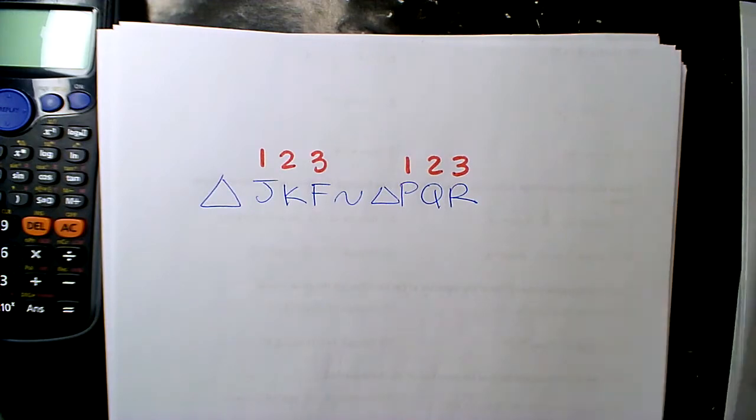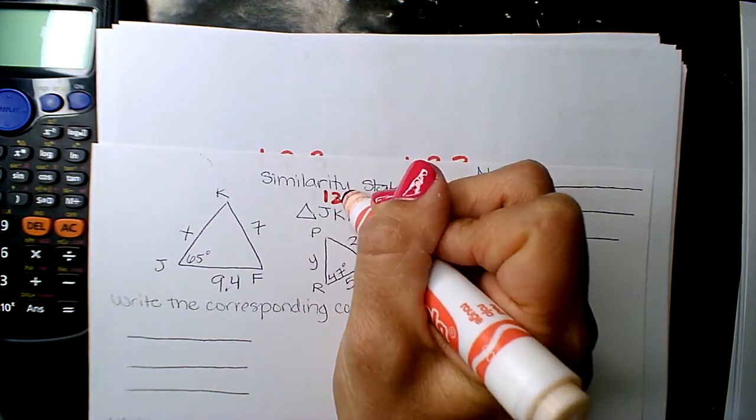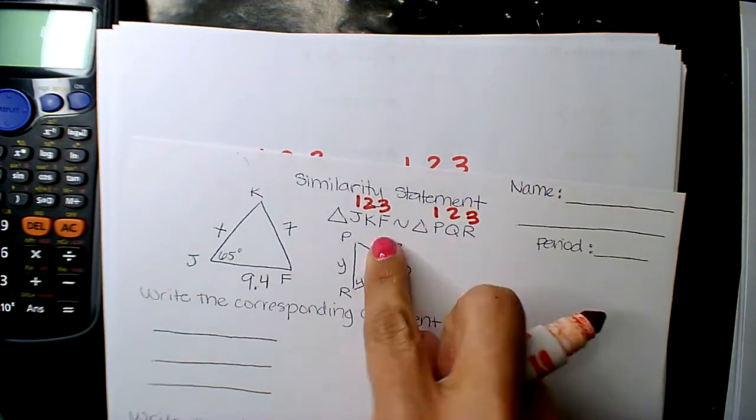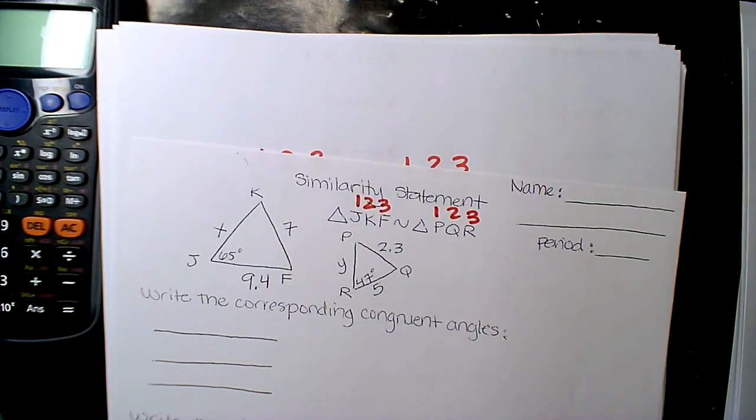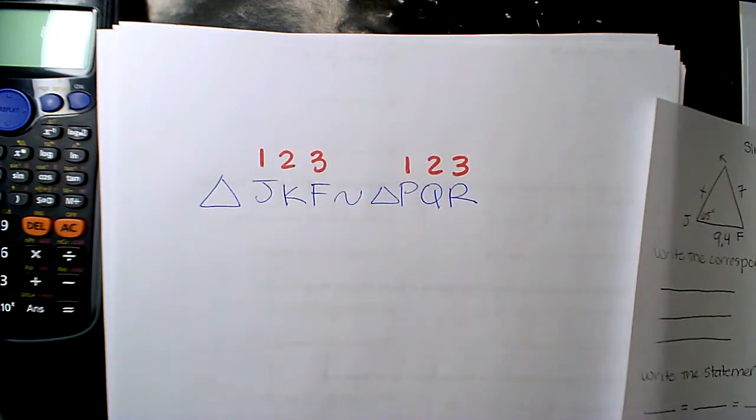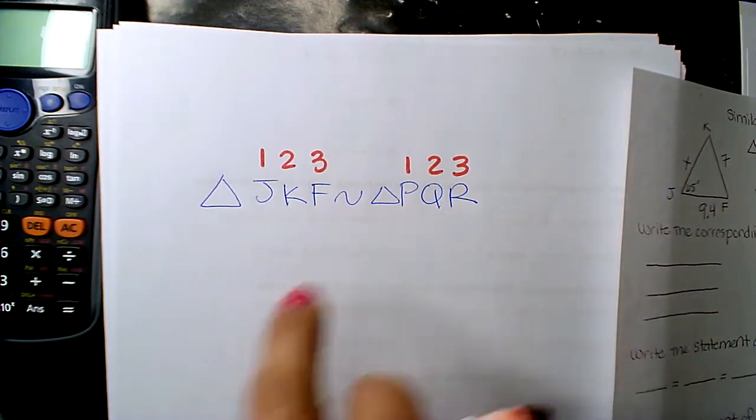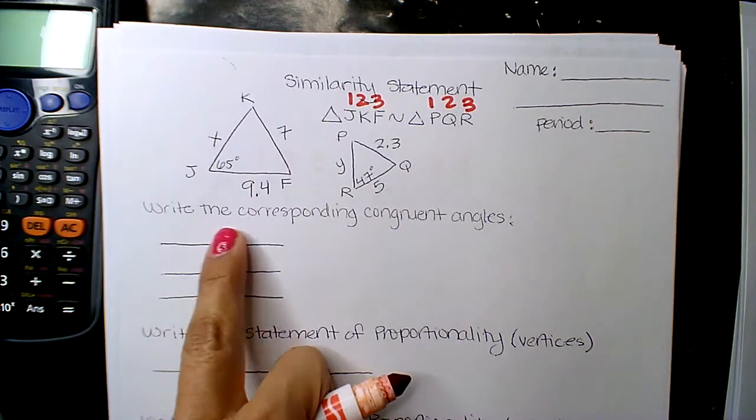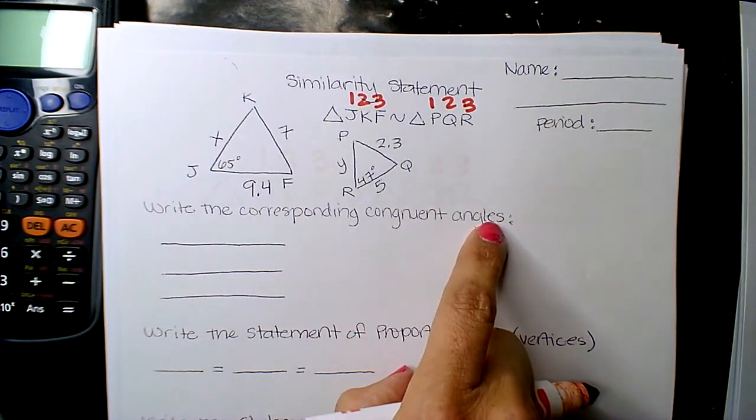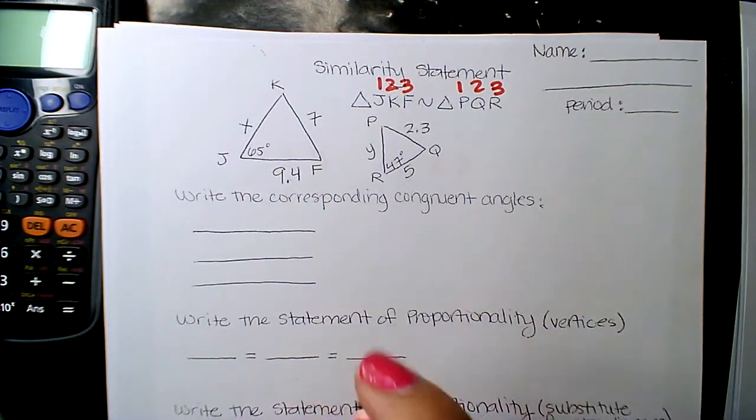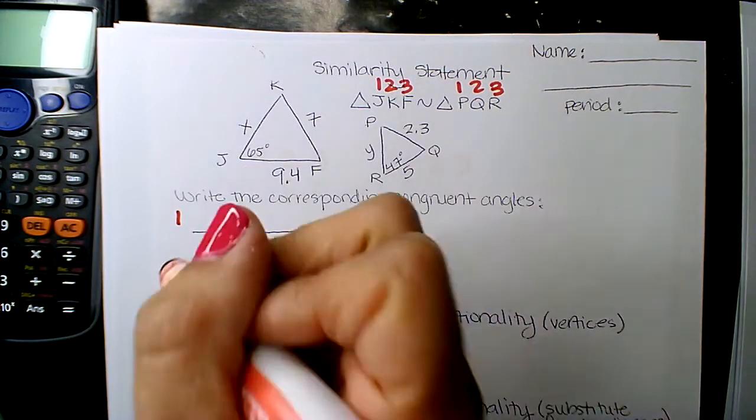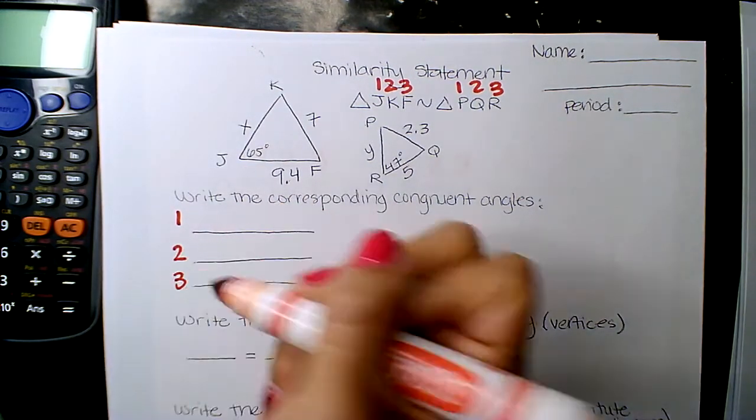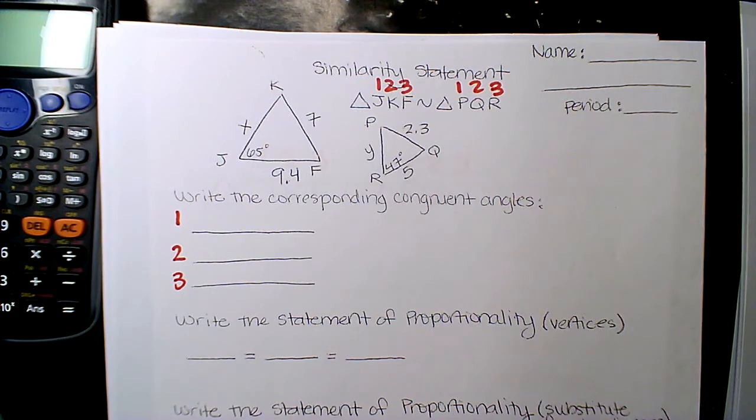Okay, so I'll come over here and still write one, two, three. But it's crowded, okay. Okay, so with that being said, this tells you your congruent angles and it gives you your similar corresponding sides. So, if I'm looking at the first part and it says write the corresponding congruent angles, the ones go together, the twos go together, and the threes go together. The order matters.